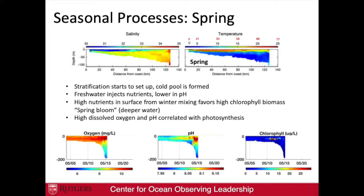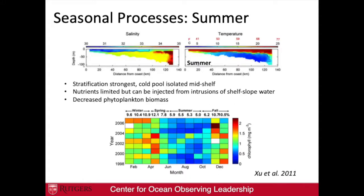In summer, we get a really strong thermal stratification. The cold pool is cut off from the surface. The cold pool has a lot of nutrients, but the surface has a hard time getting them because stratification is so strong. So you actually get a lot less chlorophyll in the summertime. This figure shows years from 1998 to 2006 with seasons across the axis. The colors are chlorophyll concentrations from low to high. You can see that summertime chlorophyll is relatively low, with some periodic higher-chlorophyll events from upwelling that Scott discussed.